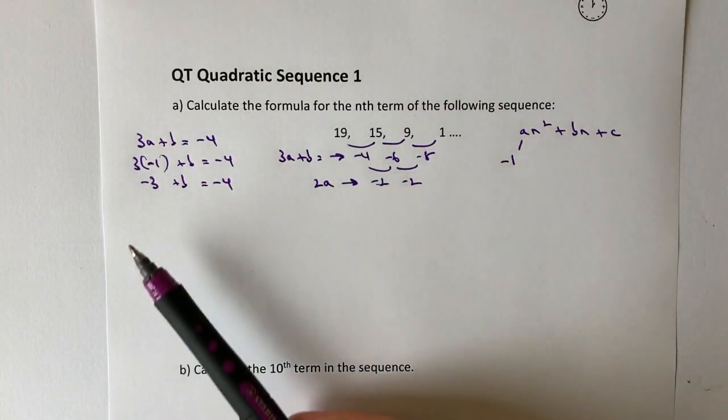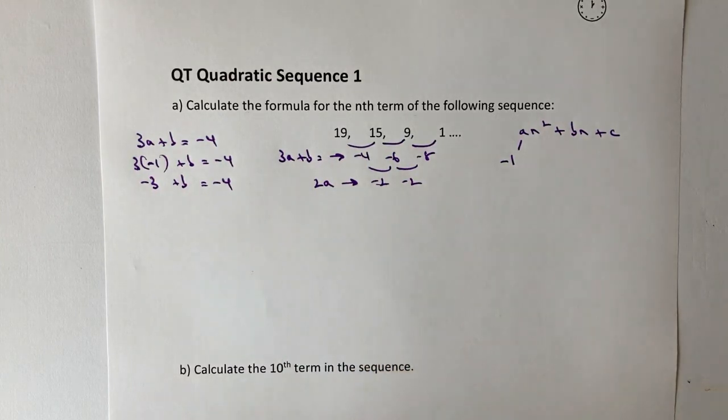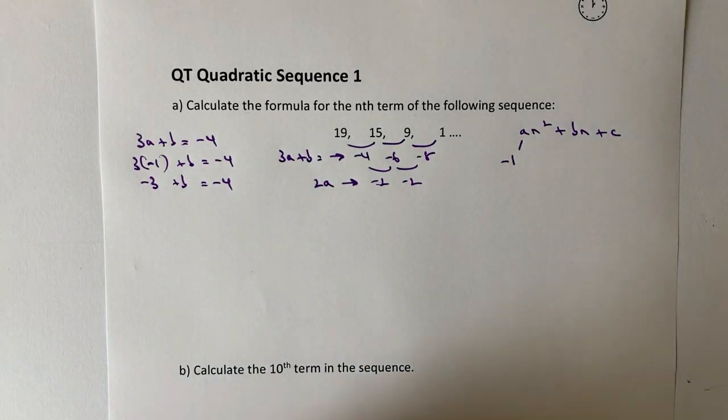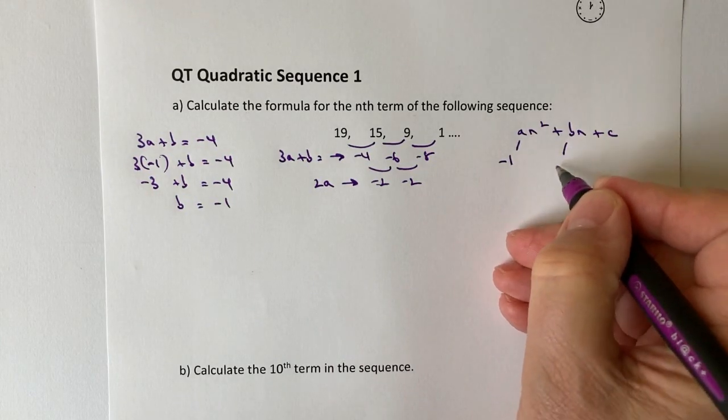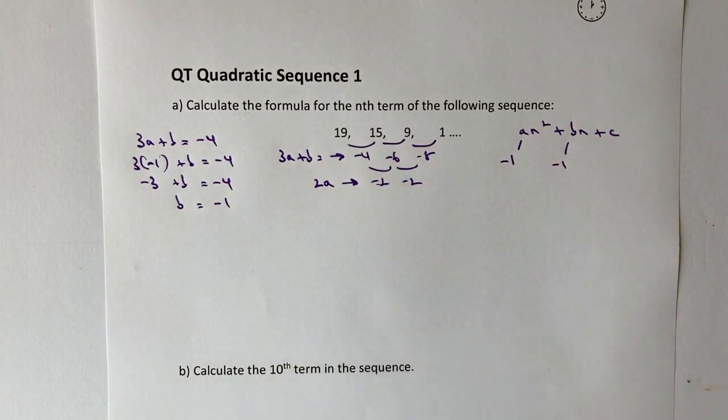Now I need to bring this minus 3 over to the right hand side. If I do that, it's going to become plus b, so therefore I'm going to say that b equals minus 1. So now I've got my value of b, which is minus 1.